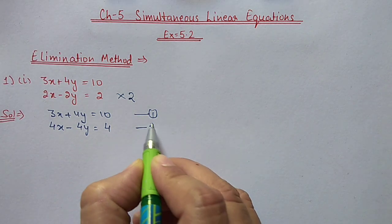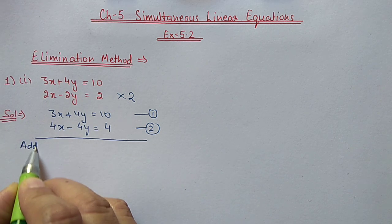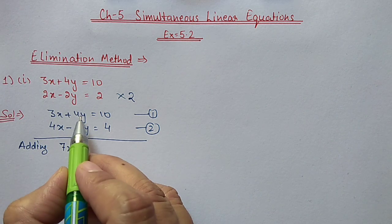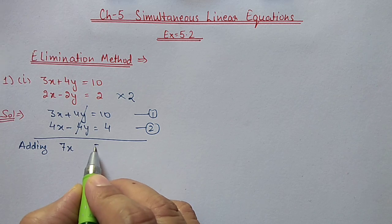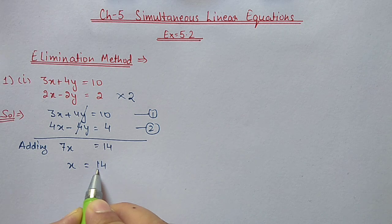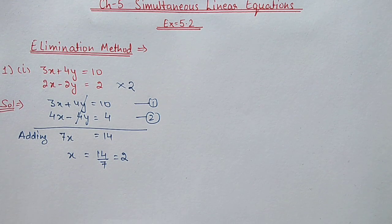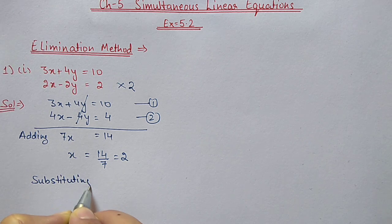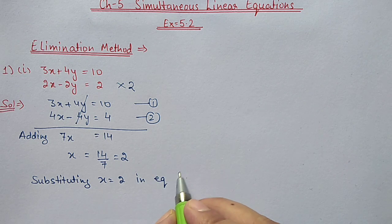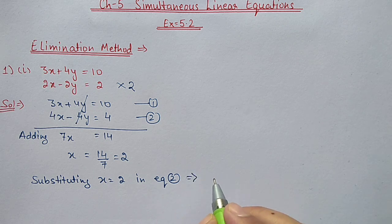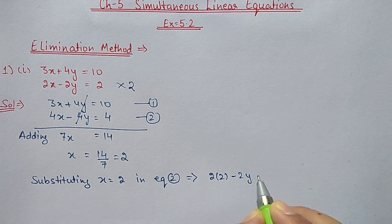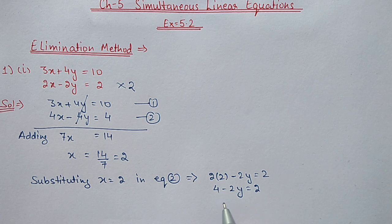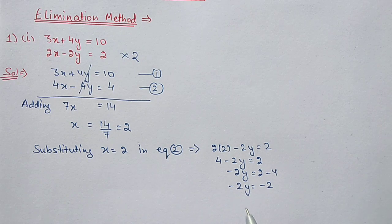This is the first equation and this is the second equation. Now if I add these two equations: 3x plus 4x will become 7x, and 4y minus 4y will eliminate and cancel out, and 10 plus 4 will become 14. So x value will be 14 by 7, equal to 2. Now this x value we have to substitute in any one equation. Substituting x equal to 2 in equation 2: 2 into 2 minus 2y equal to 2, so 4 minus 2y equal to 2, minus 2y equal to minus 2, so y value will be 1. Therefore x equal to 2 and y equal to 1.